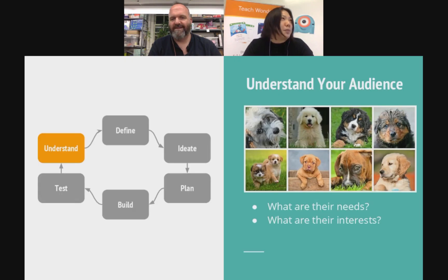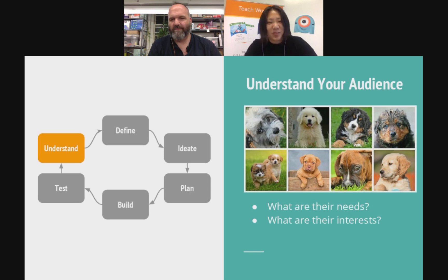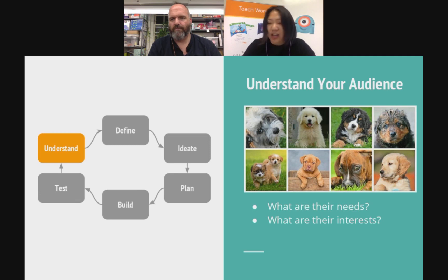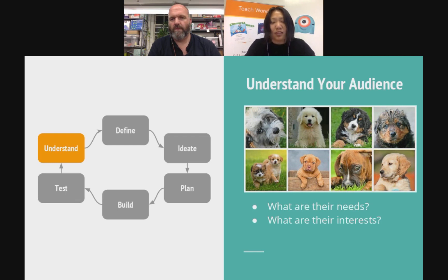We'll use puppies as an example of the design thinking process — I just got a puppy last year, so that's why I picked this topic. In the understand phase with puppies, you need to understand your audience. The audience is puppies, and you want to think about what are their needs and interests. A puppy wants affection, attention, food, and to be entertained. That's how you understand your audience.